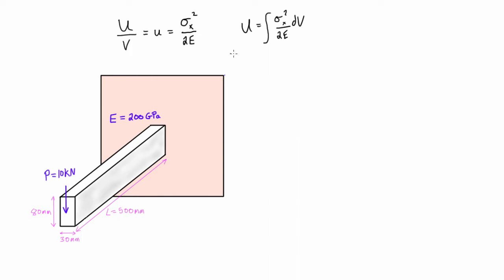All right, what we can do, if you remember from the older videos where we talked about bending, we actually have sigma x is equal to My over I, where M is the internal moment and I is the moment of inertia for that cross-section. So we can substitute that in for sigma x.